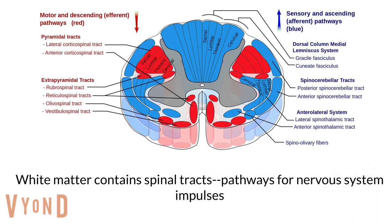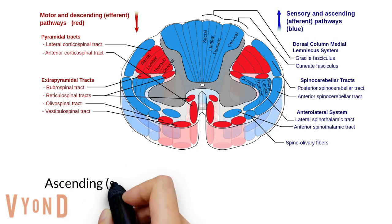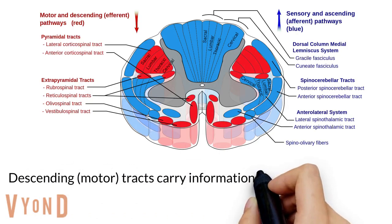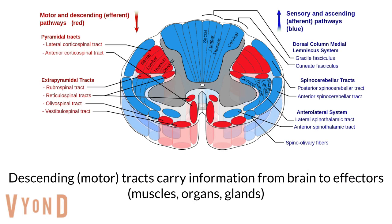The white matter contains spinal tracts, which are pathways for nervous system impulses. The ascending or sensory tracts carry information to the brain. The descending tracts carry information from the brain, which ends up at effectors — muscles, organs, or glands. Most of the tracts cross to the other side of the spinal cord or brain.